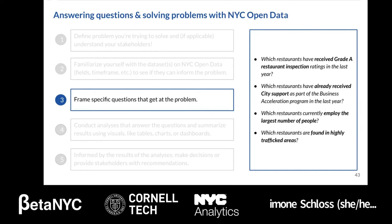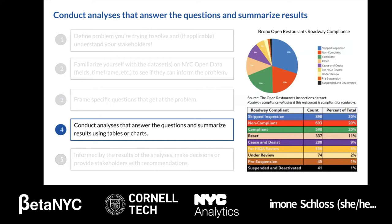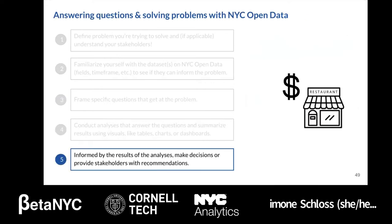Once you've identified some data sets that may be helpful in determining which restaurants receive funding, the next step is to frame specific questions that can be answered using those data sets. After you've identified relevant questions and found helpful data sets, you can conduct analyses and summarize results with visuals like a table or a pie chart. After conducting analyses with the support of New York City open data, you should be better equipped to make informed decisions and provide stakeholders with recommendations about which restaurants should receive funding.